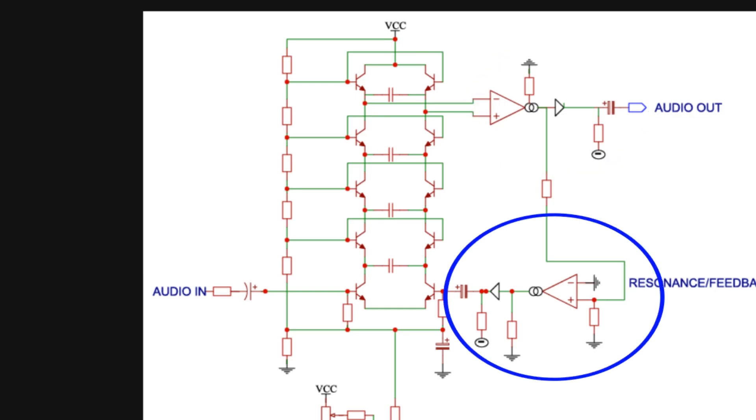Resonance is created by feeding back a portion of the output signal into the filter. Traditionally, this is done by having a pot that sends less or more signal from the output into the filter.